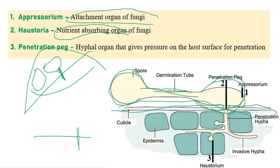Once after landing, the spore can't directly penetrate inside because sometimes heavy winds or other disturbances might cause the spore to be washed out from the leaf surface. To prevent that, to strongly hold onto the leaf surface, it produces a structure called appressorium. That's why appressorium is the attachment organ — also called the anchoring organ — of fungi. It strongly attaches to the leaf surface or whatever surface the spore lands on.